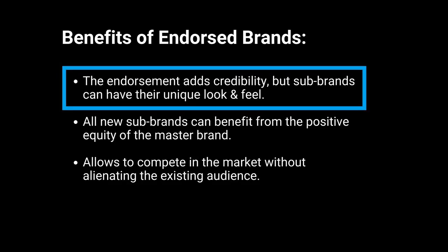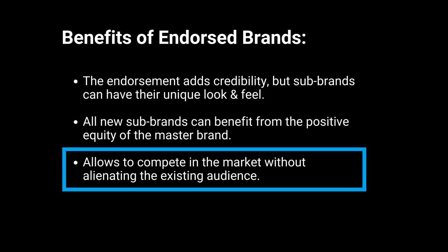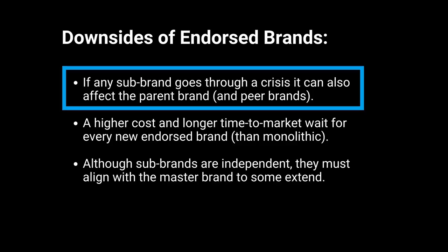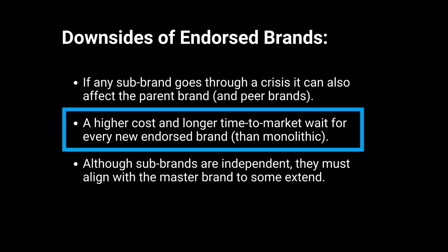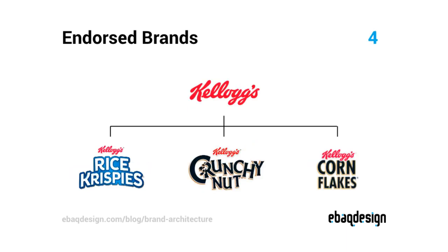Some benefits of the endorsed brand architecture: first, the endorsement adds credibility but sub-brands can also have their unique look and feel; second, all new sub-brands can benefit from the positive equity of the master brand; and third, it allows you to compete in the market without alienating your existing audience. Some downsides: first, if any sub-brand goes through a crisis it can also affect the parent brand and peer brands; second, there is a higher cost and longer time to market for every new brand; and third, although sub-brands are independent, they must align with the master brand to some extent. Famous brands using this endorsed model include Virgin, Marriott, Nestlé, Kellogg's, and Sony.